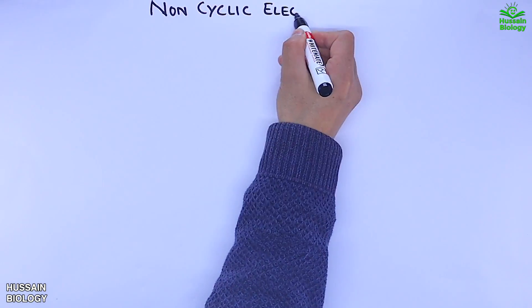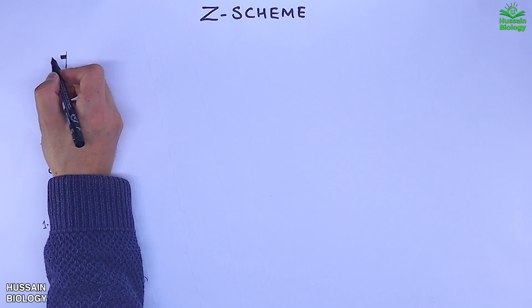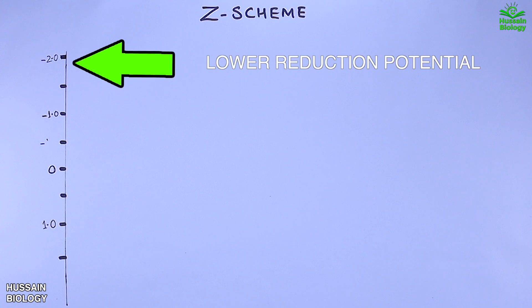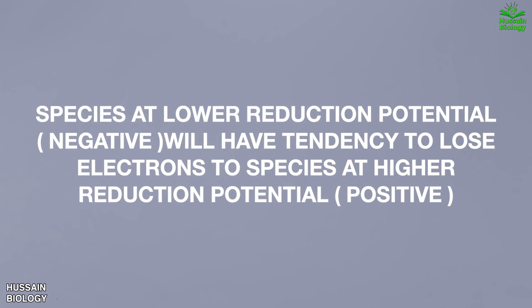Now let's get to the mechanism of electron flow through Z-scheme form. Here in this diagram on the left side we have the reduction potentials. It must be noted that the higher we go, the lower reduction potential we have in this diagram, as in negatives. A species at lower reduction potential will have a tendency to lose electrons to a species at higher reduction potential.